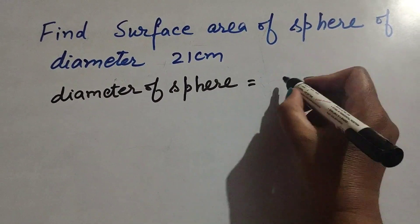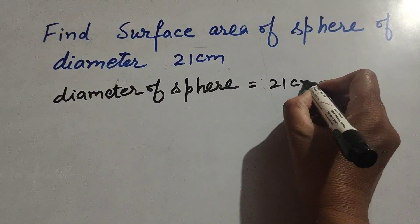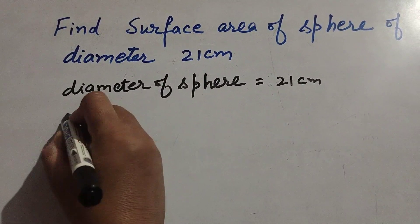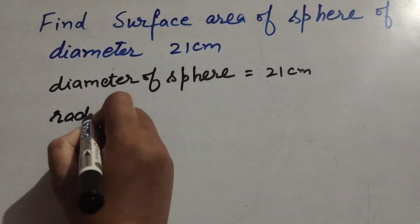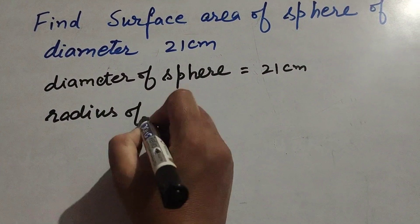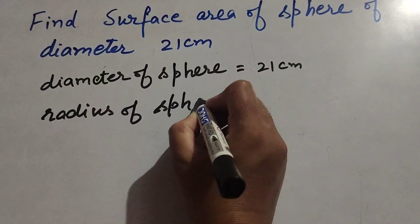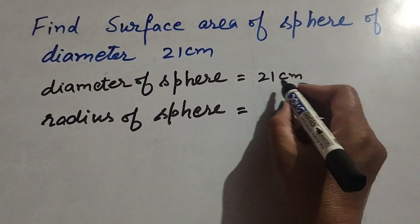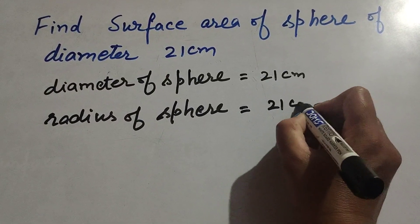It is equal to 21 centimeters. To find the surface area of the sphere, we need to find its radius. So radius of sphere equals diameter over 2. The diameter is 21 centimeters, so the radius is 21 centimeters over 2.